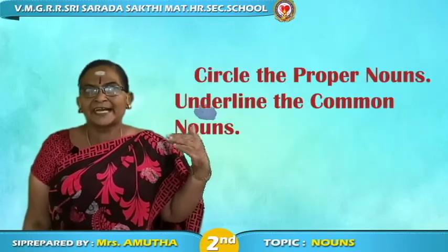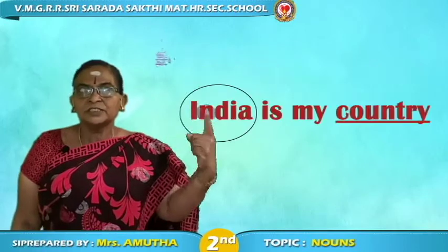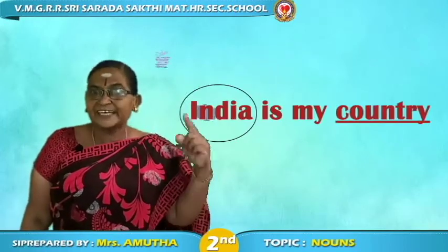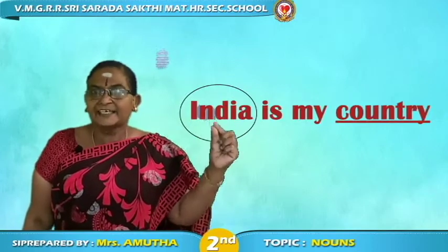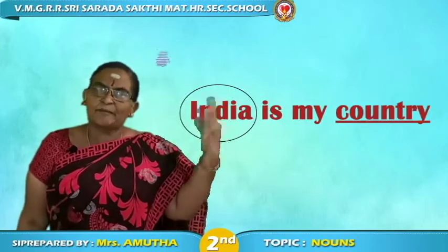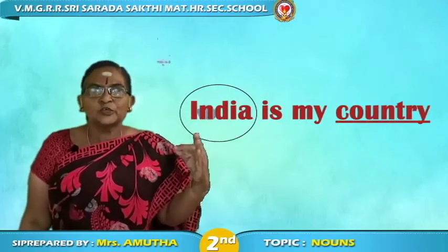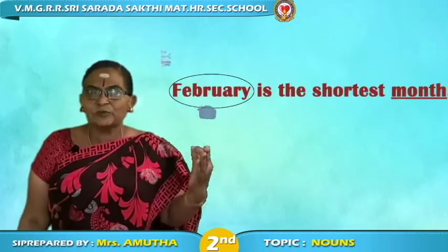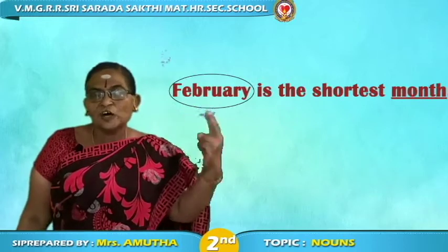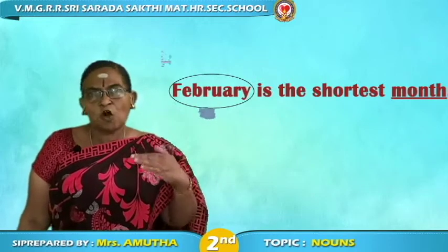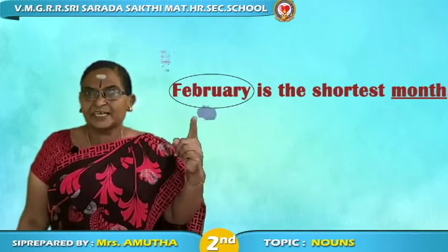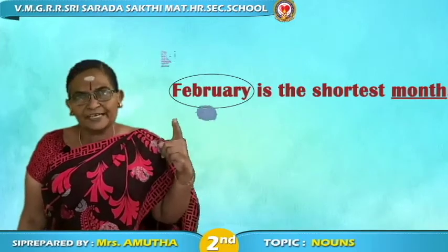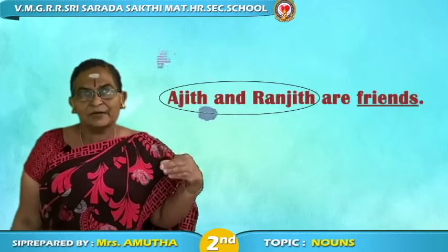Now circle the proper nouns and identify the common nouns. First one: India is my country. Here India is the name of the country — country means any country, like America, Russia, China. So India is a proper noun and country is a common noun. Second: February is the shortest month. Month is a common noun. February is the name of a specific month, so February is a proper noun.